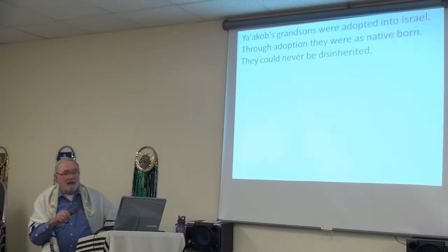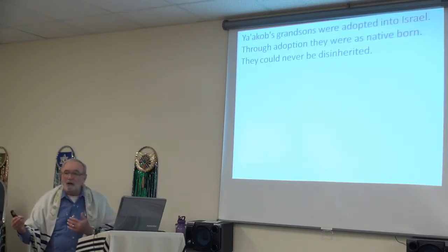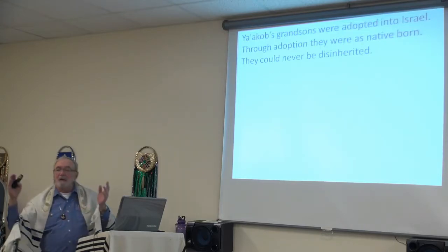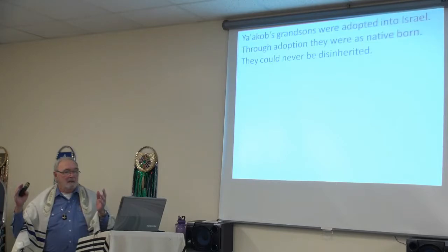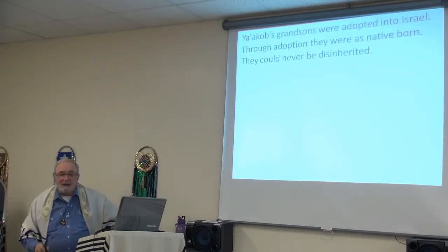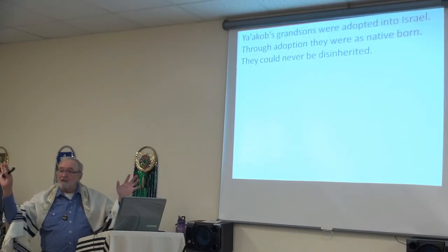Notice that we are called by His name. We've already mentioned we were adopted sons and daughters, but how did we get to be called by His name? Lee comes up here and does the Aaronic blessing — he raises his hands and puts the sign of Shaddai in the air with his hands, the shin. Yahweh says when he does that, He places His name upon us. It is placed on us through the blessing — kind of an anointing.